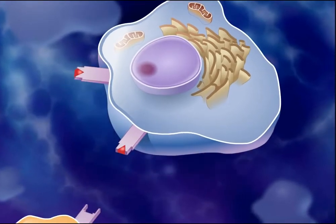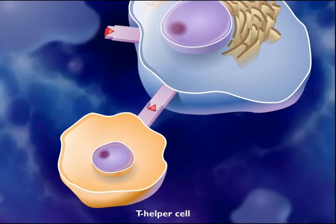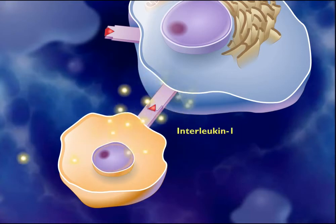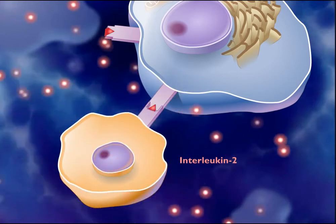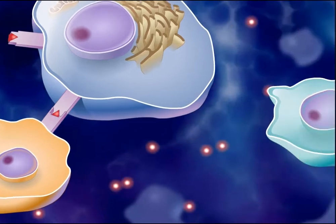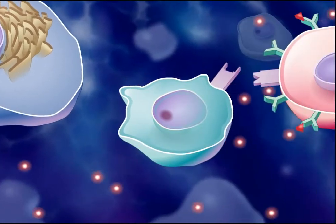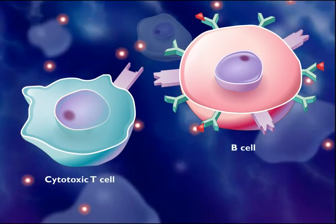An antigen-presenting macrophage interacts with a T-helper cell that can recognize the same antigen. During the interaction, the macrophage releases a chemical alarm signal called interleukin-1, which stimulates the T-helper cell to secrete interleukin-2. Interleukin-2 causes the proliferation of certain cytotoxic T-cells and B-cells.